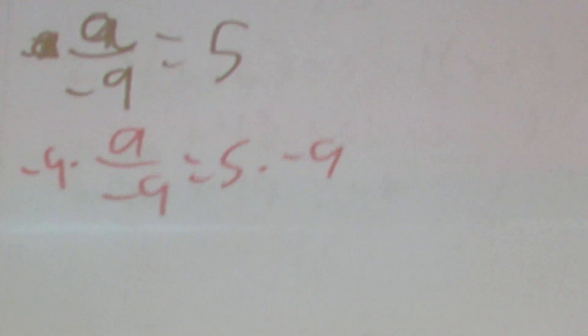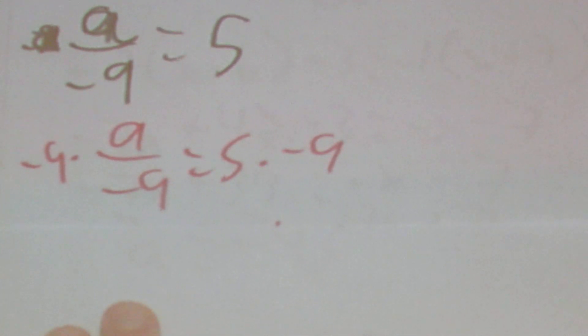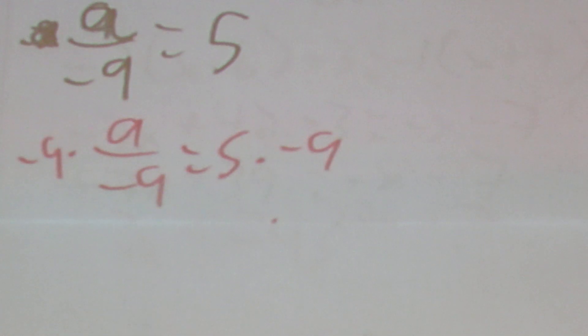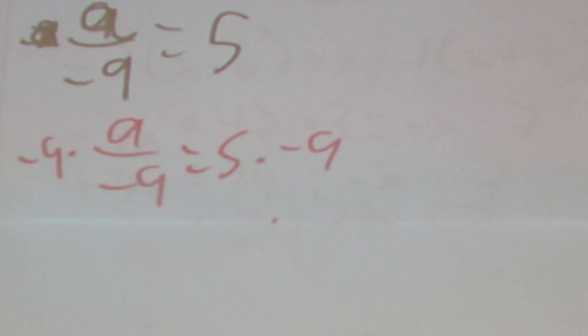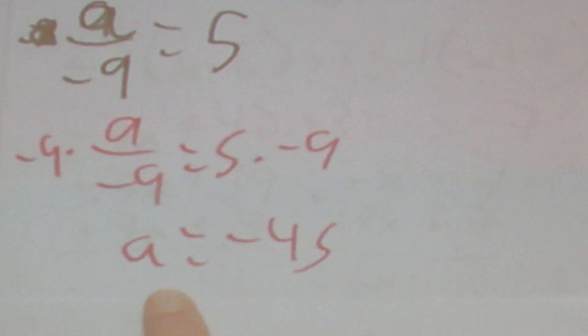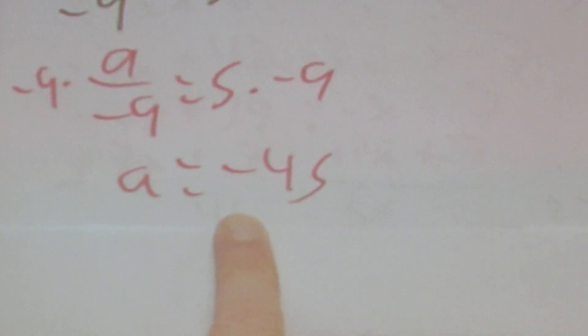Then something like a over −9 equals 5. We multiply both sides by −9 because the opposite of dividing is multiplying, and we get a = −45.